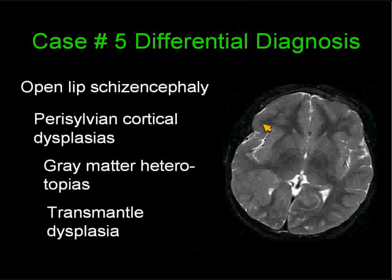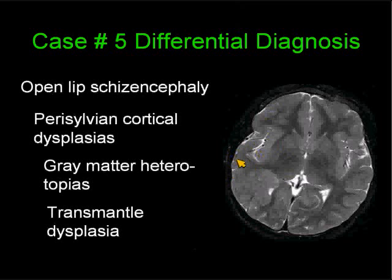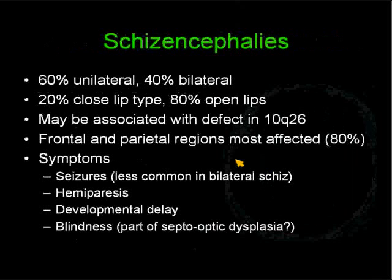Transmural dysplasia is basically a hamartoma of gray matter. The dysplasia extends from the wall of the lateral ventricle — the zone of the trigerminal matrix — to involve the cortex. In this case, it is not only involving the cortex here, but there is a cortical dysplasia involving the posterior aspect of the sylvian fissure.